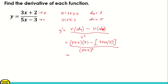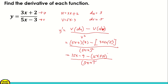Then we multiply. 5x times 3 is 15x. Negative 3 times 3 is negative 9. Minus — let's multiply these two: 3x times 5 is 15x, and 2 times 5 is positive 10. All over 5x minus 3 squared. Now let's expand what's inside the parentheses: we get 15x plus — wait, that becomes negative 15x and then negative 10.